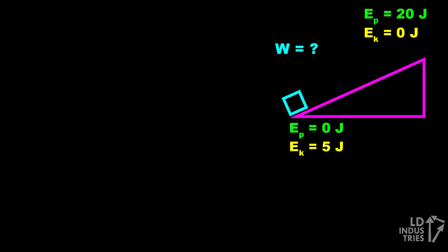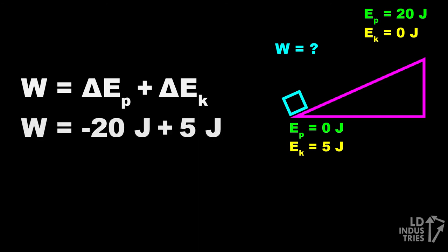I could use the work energy theorem again, but this time I could say the change in gravitational potential energy was negative 20 joules, since the gravitational potential energy decreased by that amount. This gives you an answer of negative 15 joules, which means that friction removed 15 joules of energy from the system.